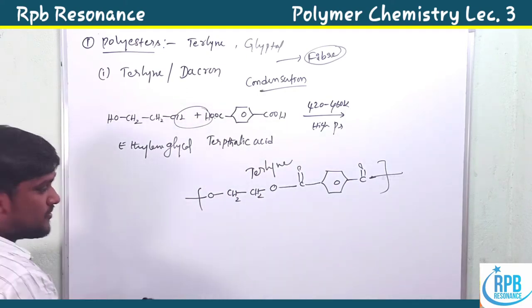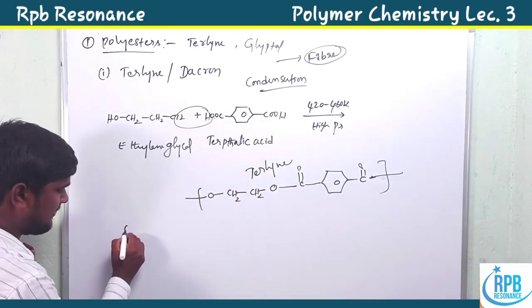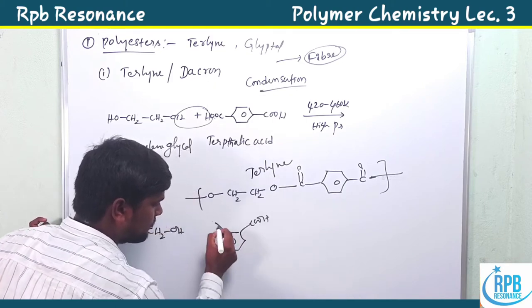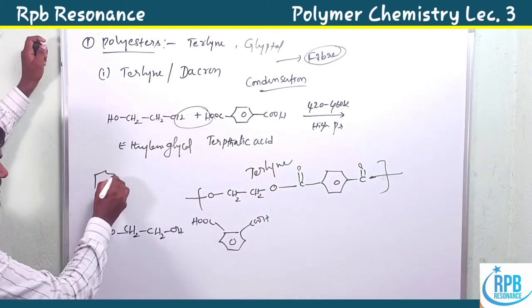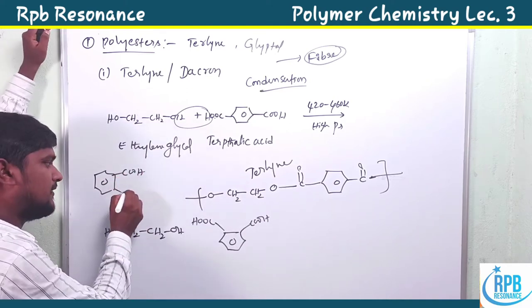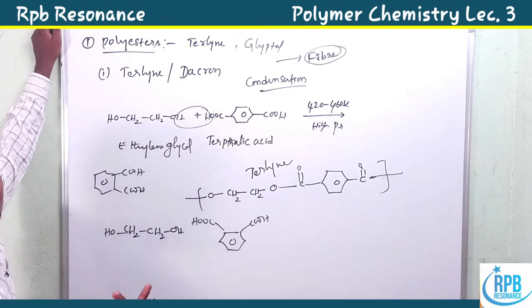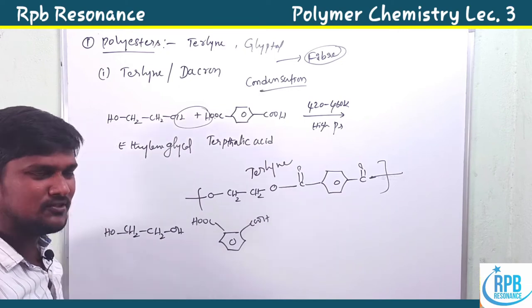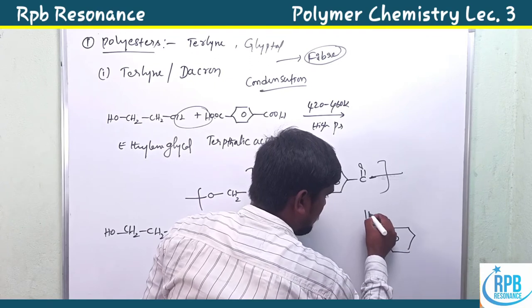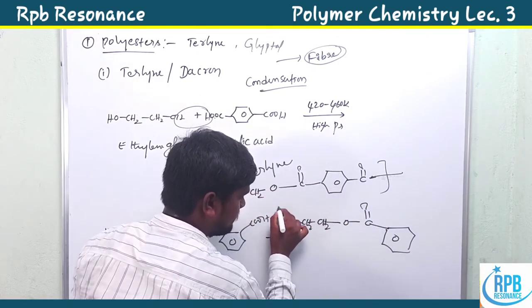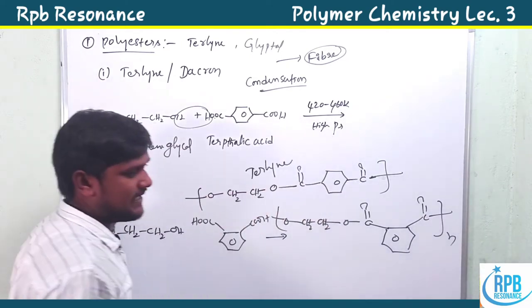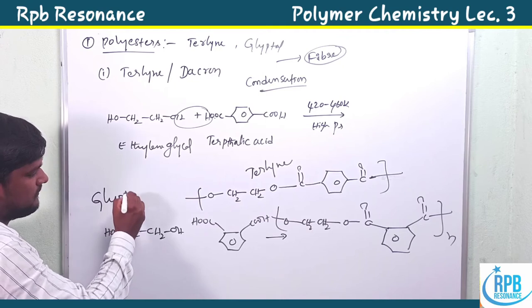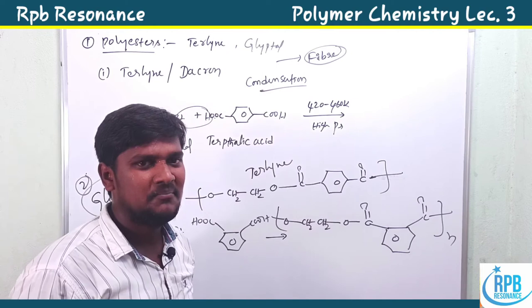With a small change, another type of polymer is produced. Here we use ethylene glycol (CH₂–CH₂(OH)₂), but instead of terephthalic acid we use phthalic acid — benzene with two –COOH functionalities at the adjacent (ortho) position. Using phthalic acid instead of terephthalic acid, we get this kind of polymer, which is simply called Glyptal.